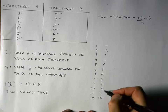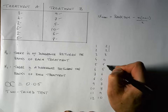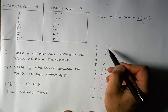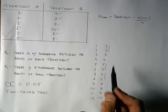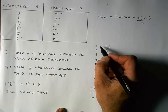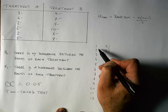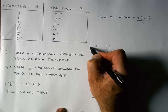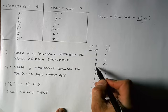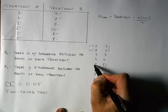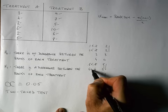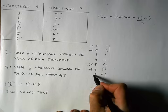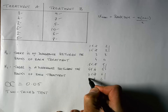Before we do any calculations, we have to check for ties. We have two twos, two fives, and two sixes, so we need to rank those equally. We can't assign rankings of one and two to the two twos because we don't know which is which. The way to handle ties is to take the average of the rankings. For the two twos ranked one and two: one plus two equals three, divided by two gives 1.5. For the two fives ranked five and six: five plus six equals eleven, divided by two gives 5.5. For the two sixes ranked seven and eight: seven plus eight equals fifteen, divided by two gives 7.5.